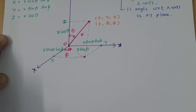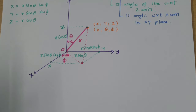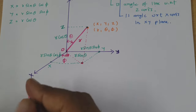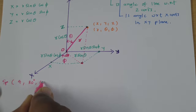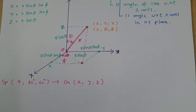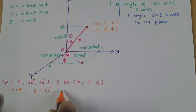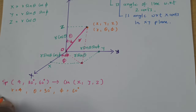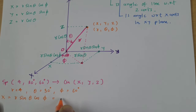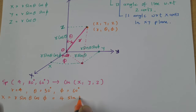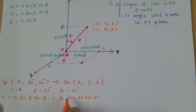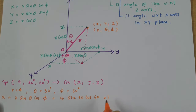Now let us solve one problem to make this more clear. We are given a question in spherical coordinates: R is 4, Theta is 30 degrees, and Phi is 60 degrees. We need to identify the X coordinate first. X equals R sin Theta cos Phi, so that is 4 times sin 30 times cos 60. Sin 30 is one-half and cos 60 is one-half, so 4 times one-half times one-half equals 1.